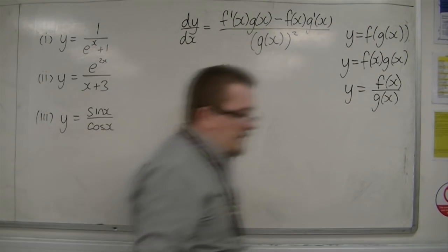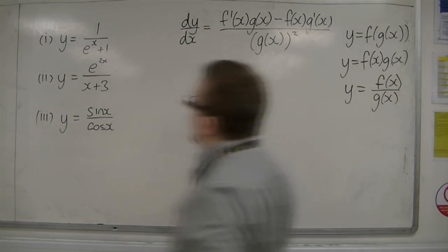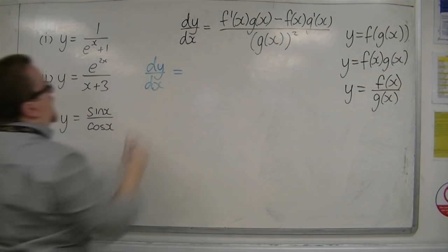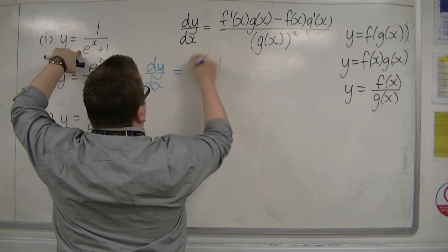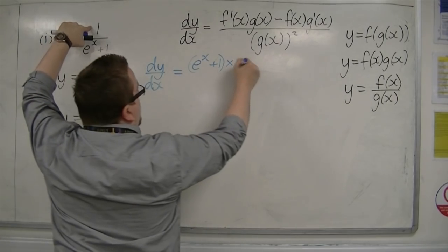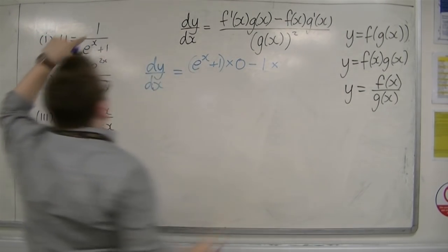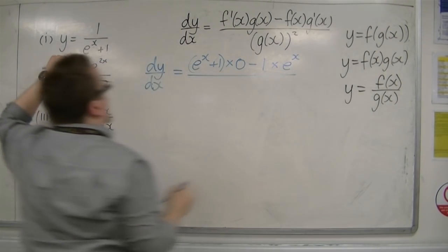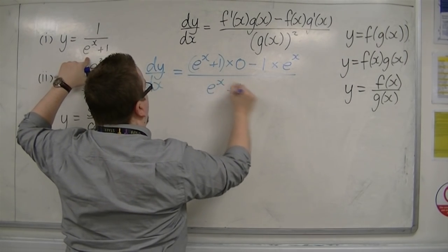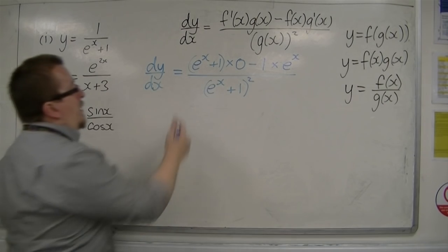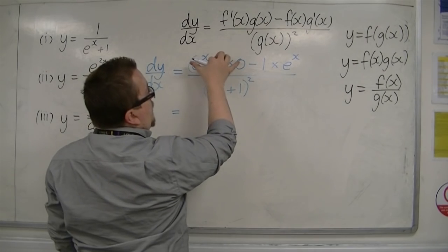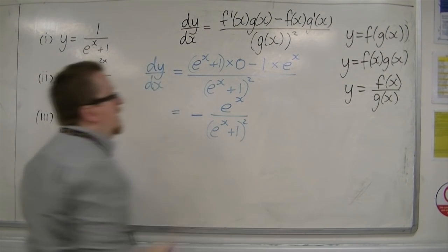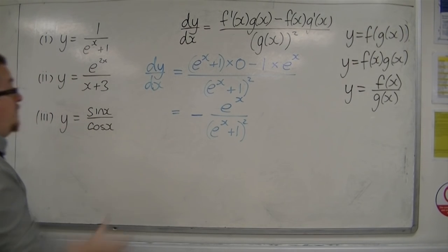I'm going to work through three examples to show you how this works. For the first one, dy by dx equals the bottom — e to the x plus 1 — times the derivative of the top, which is 0. Take away the top, which is 1, times the derivative of the bottom, which is e to the x (since the 1 differentiates to 0). All over the bottom squared, so e to the x plus 1 squared. Tidying up, that gives minus e to the x over e to the x plus 1 squared.